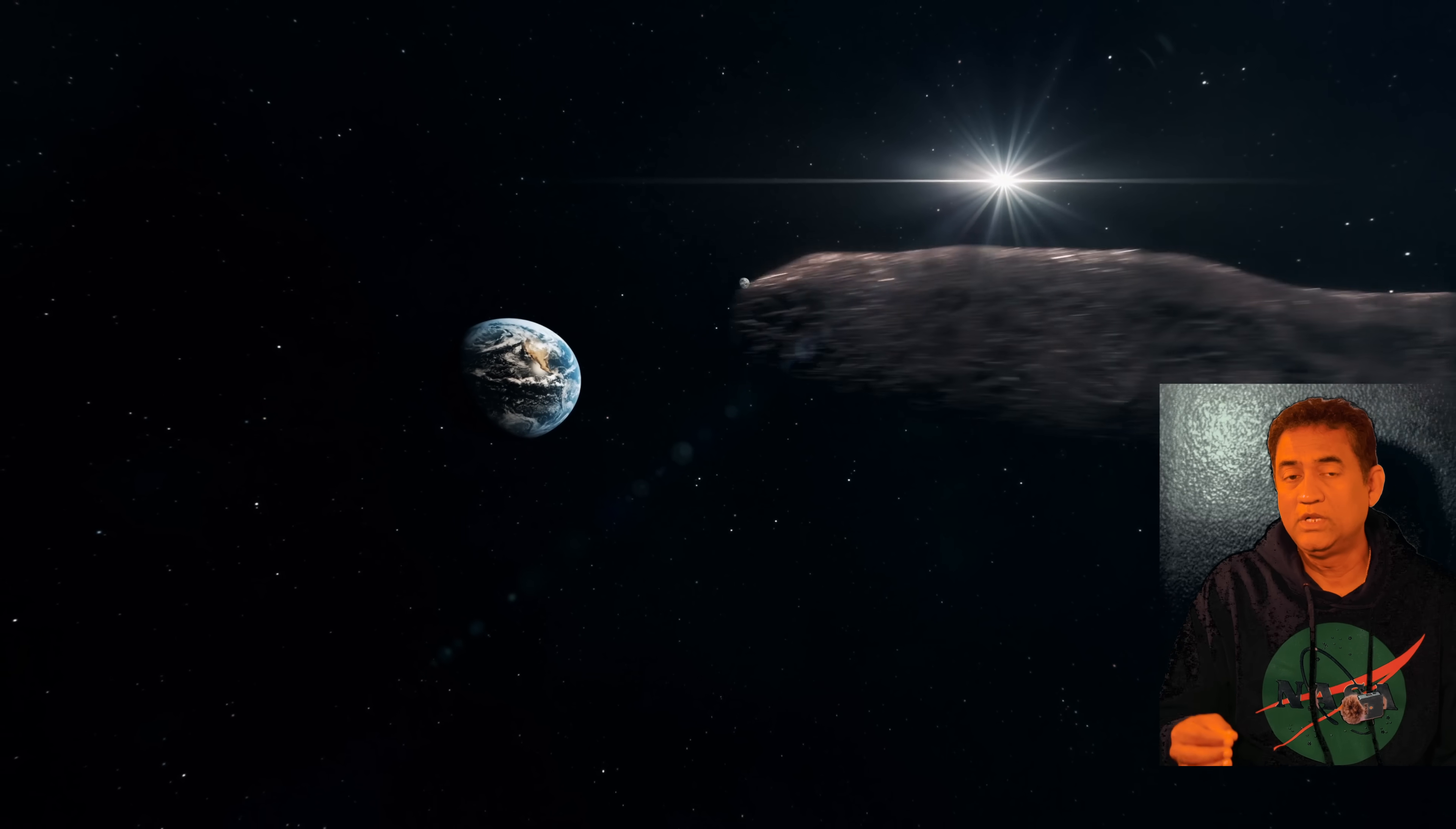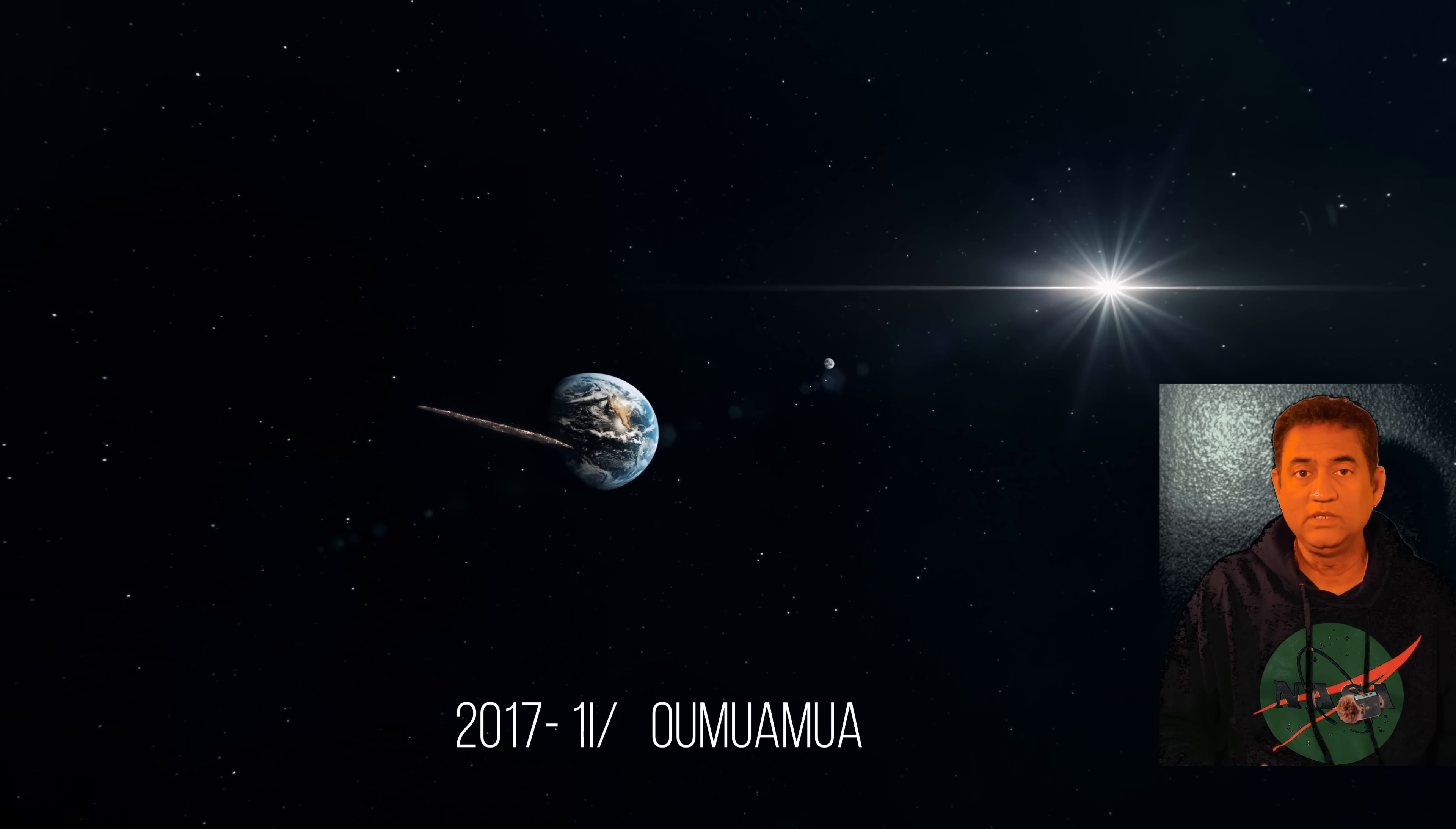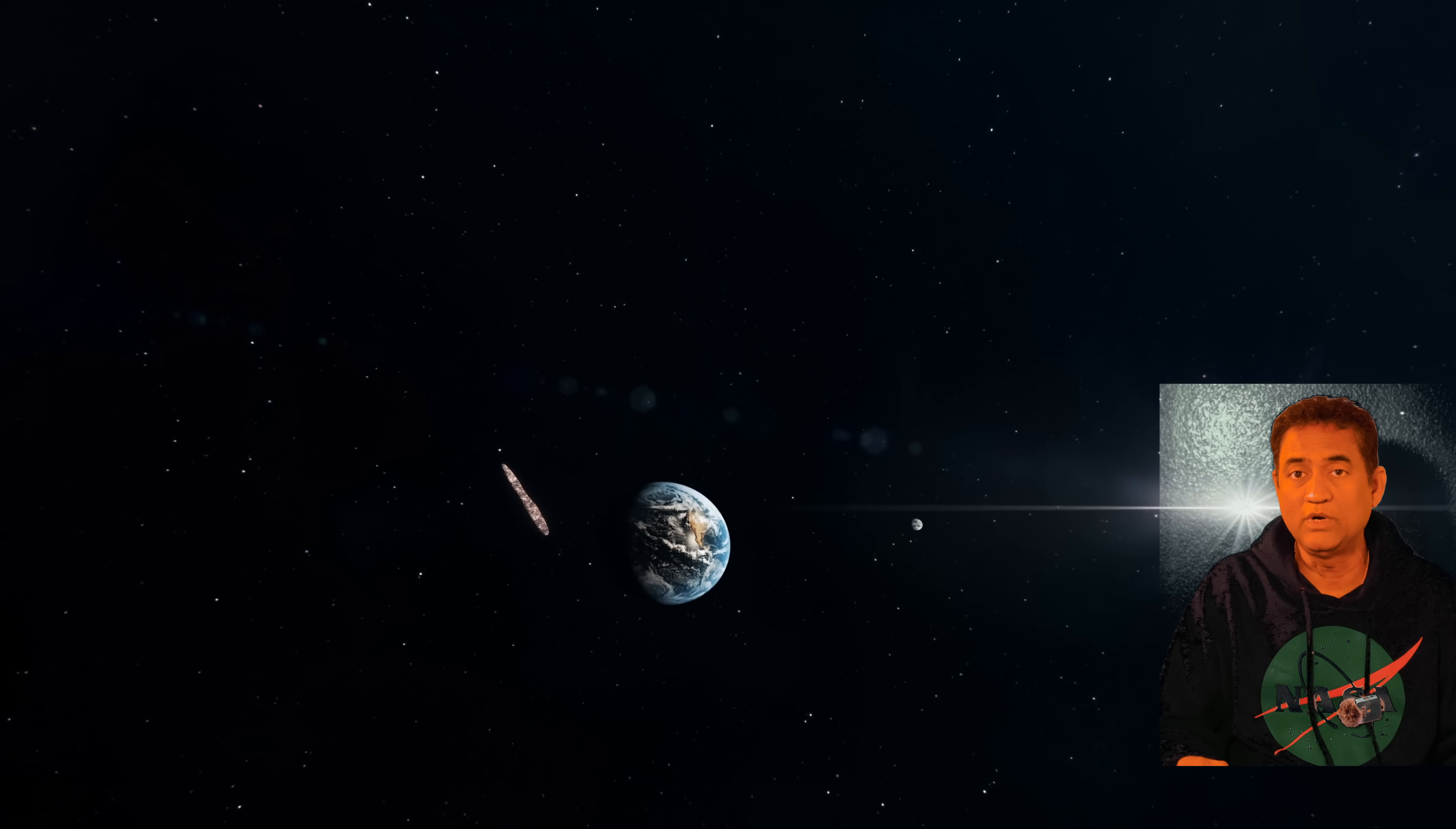Remember, this is only the third interstellar object we have ever seen. In 2017, Oumuamua, 1I, strange, elongated, and mysterious, but no visible coma. It is also called the Black Comet. 2019, 2I/Borisov